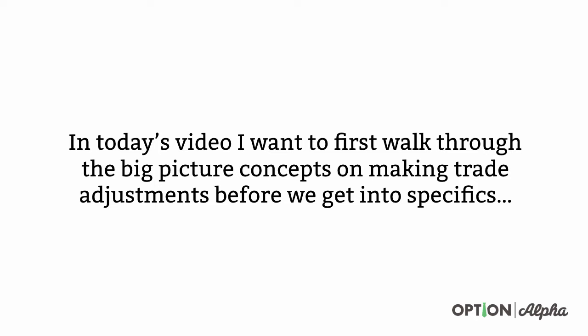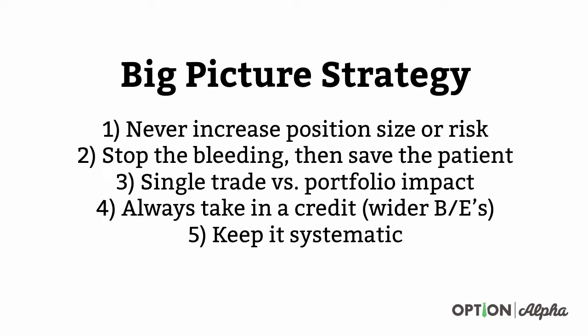It's important that you watch this video because you have to understand why we're doing what we're doing and what the overall goal is. Here's how we lay out the big picture strategy when we think about trade adjustments — it really comes down to five things. Number one: never increase position size or risk. Number two: stop the bleeding, then save the patient. Number three: look at single trade adjustment versus portfolio impact. Number four: always take in a credit to have wider breakeven points. Number five: keep it systematic.